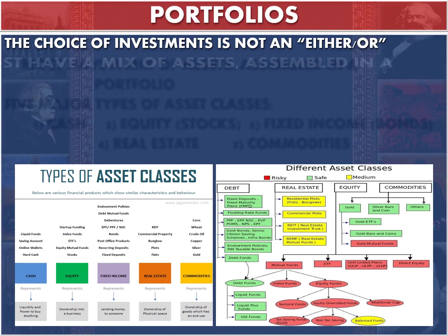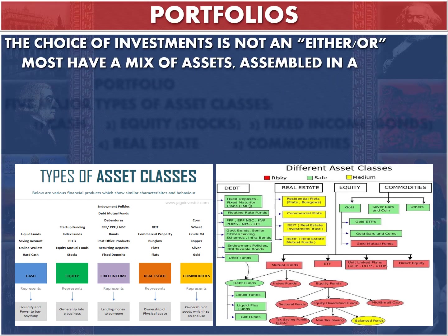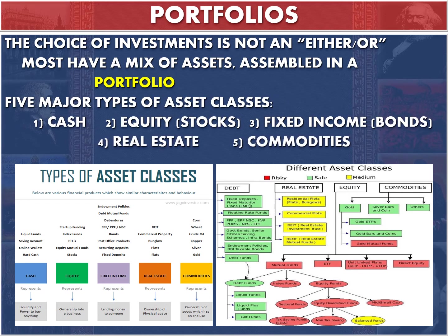Let's begin talking about what a portfolio is. When you choose to invest, it's not an either-or proposition. Most people have a mix of assets assembled in a portfolio. Generally these different types of assets are divided into five major categories, though you can subdivide them further. The first asset class is cash or cash equivalents — things we'd generally think of as money — including checking accounts, money market accounts, and cash in a bank deposit.